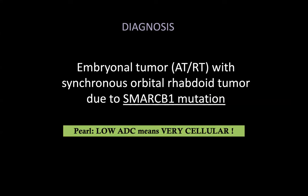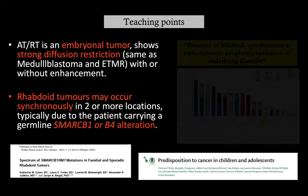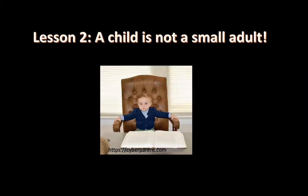My pearl: low ADC means very cellular, no matter the contrast. If you look at the literature, rhabdoid tumors may occur synchronously, and you need to think SMARCB1 or B4 mutation. Looking at this paper from Nature, SMARCB1 and B4 are typical mutations for rhabdoid tumors. Another teaching point: the presence of bilateral, synchronous, or metachronous neoplasms is indicative of an underlying genetic disorder.